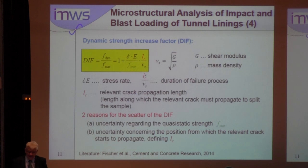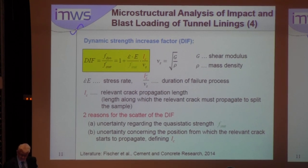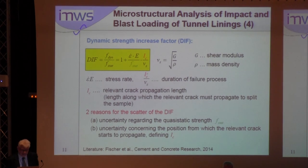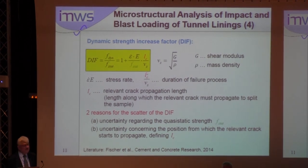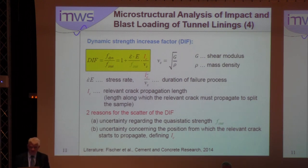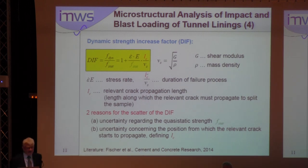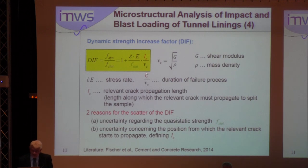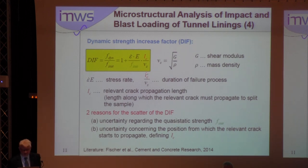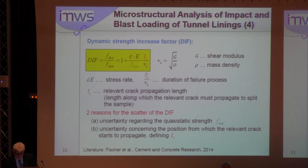The formula on top of this slide shows the dynamic intensity factor. It contains the stress rate, equal to the strain rate ε-dot multiplied by the modulus of elasticity, and a ratio L_c over ν_s, which denotes the duration of the failure process. ν_s is defined on the top of the slide, and L_c is the relevant crack propagation length — the length across which the relevant crack must propagate to split the sample. There are two reasons for scatter: uncertainty regarding the quasi-static strength, and uncertainty concerning the position from which the relevant crack starts to propagate, defining L_c.